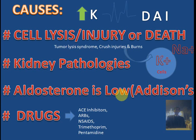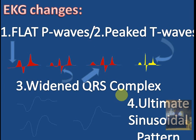So these are the main four causes: cell lysis causing leakage of potassium out of the cell, kidney pathologies, low aldosterone, and a few drugs that cause hyperkalemia and increase extracellular potassium in the body. There may be other causes, but these are the main ones. Let's go to the next slide about EKG changes.